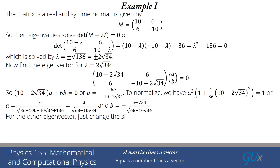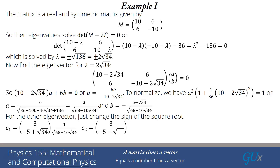For the other eigenvector, all that changes is the sign of the square root of 34. So E1 equals [3, minus 5 plus √34] over √(68 minus 10√34), and E2 equals [3, minus 5 minus √34] over √(68 plus 10√34). You should immediately verify that E1 dot E2 equals zero. We already know E1 and E2 are normalized to 1 by construction, but verifying their orthogonality confirms these eigenvectors form an orthonormal basis set.